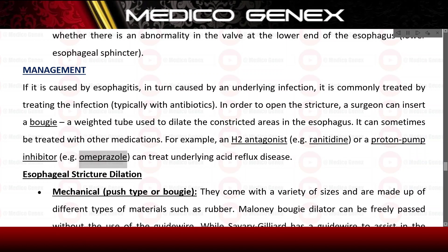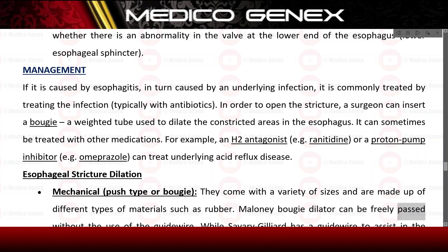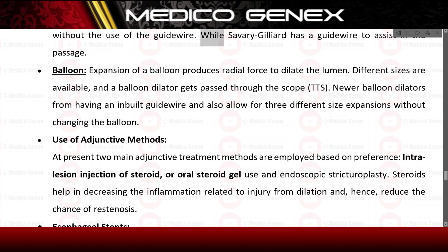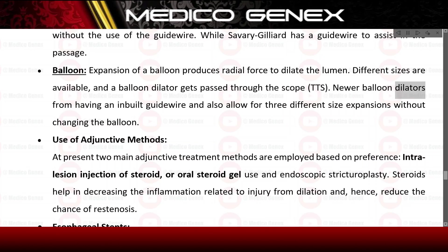Esophageal stricture dilation — mechanical push type or bougie — comes in a variety of sizes and materials. The Maloney bougie dilator can be freely passed without a guidewire, while the Savary-Gilliard has a guidewire to assist passage. Balloon dilation produces radial force to dilate the lumen; different sizes are available, and balloon dilators are passed through the scope (TTS). Newer balloon dilators have a built-in guidewire and allow for three different size expansions without changing the balloon.